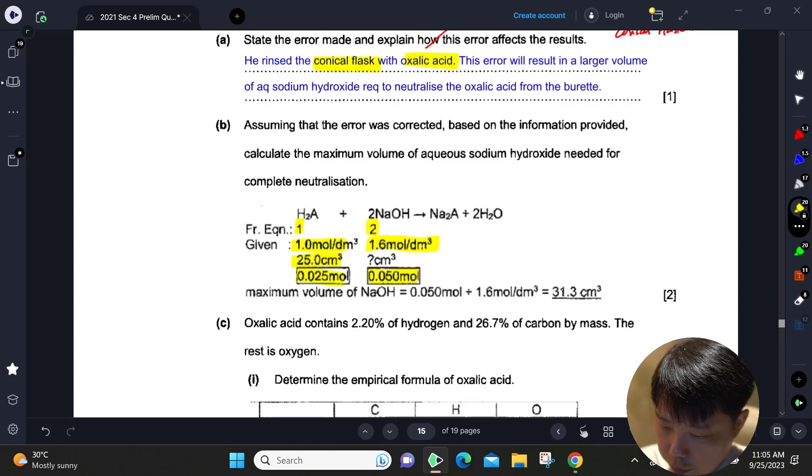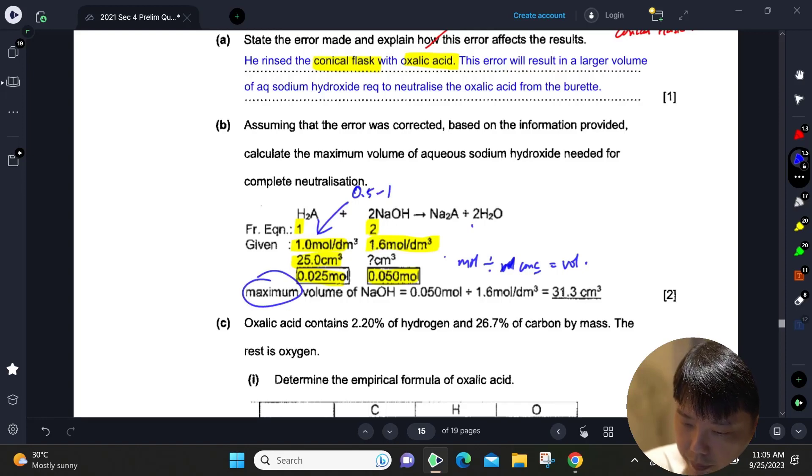The ratio is 1:2. If we have 0.050 moles, we divide the moles by concentration to get the volume. You get about 31.3 cm³ for the maximum volume of NaOH that you should use. Please note we are using 1 mol/dm³. The question gives us a range of 0.5 to 1 mol, but we want to calculate the maximum volume, so we use the maximum concentration for the oxalic acid.